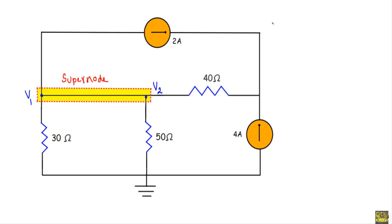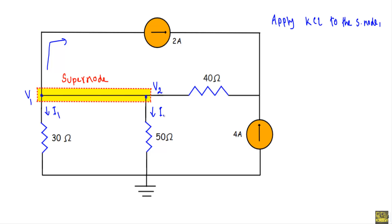After that I will apply KCL — Kirchhoff's current law — to the supernode. This 2-ampere current source is outgoing from the supernode. This current is unknown; let's say I assign this current as I1. This current is outgoing as I2, and this current is also unknown so I will assign it as I3. As all currents are outgoing, I can write: I1 + I2 + I3 + 2 = 0.